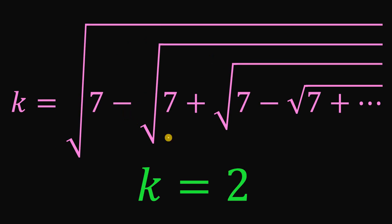Therefore, given k equals the square root of 7 minus the square root of 7 plus the square root of 7 minus the square root of 7 plus, continuing until infinity, the value of k is 2. And as always, we are done.